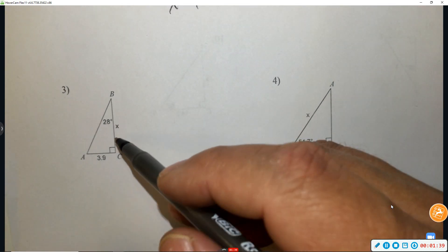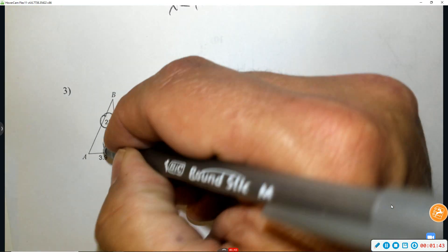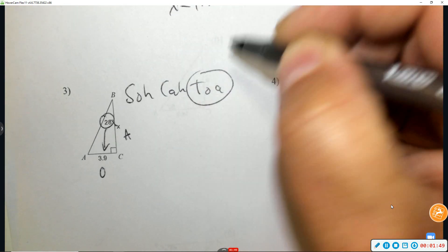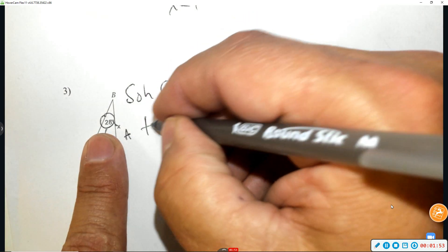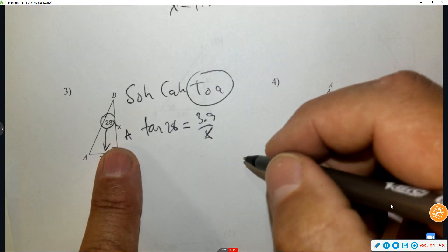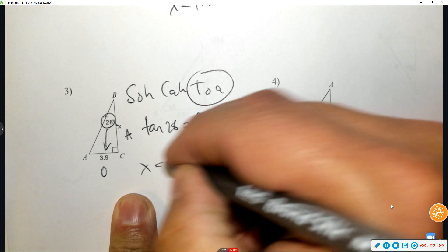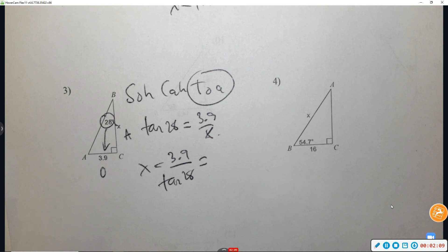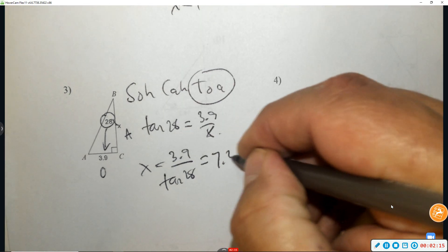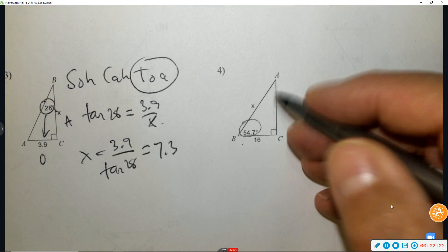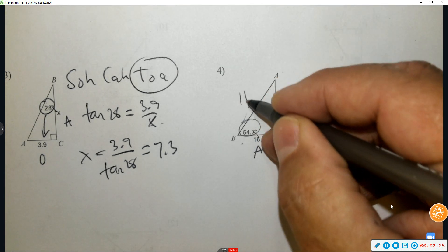Number three — press pause and see if you can set it up before I do it. It's 28 degrees; that is opposite, this is adjacent. SOH-CAH-TOA: which one uses opposite and adjacent? We write tangent of 28 equals 3.9 over x. Again, x is in the denominator, so they trade places: 3.9 divided by tangent 28.